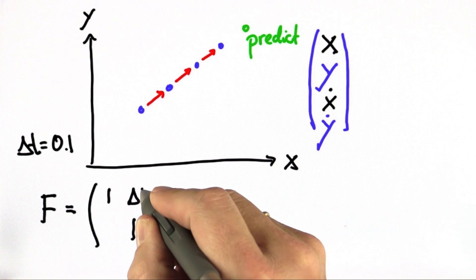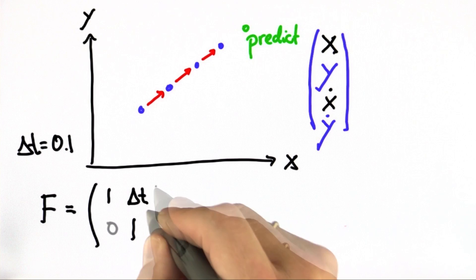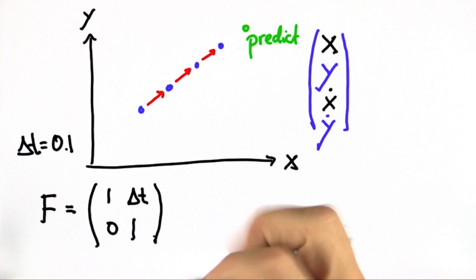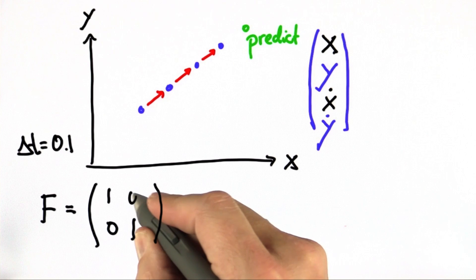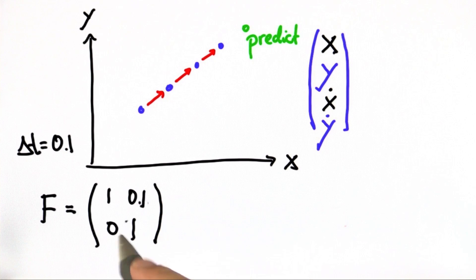But we also knew that the velocity affected our state in the following way. And we could now place 0.1 instead of the delta t to get this specific F matrix.